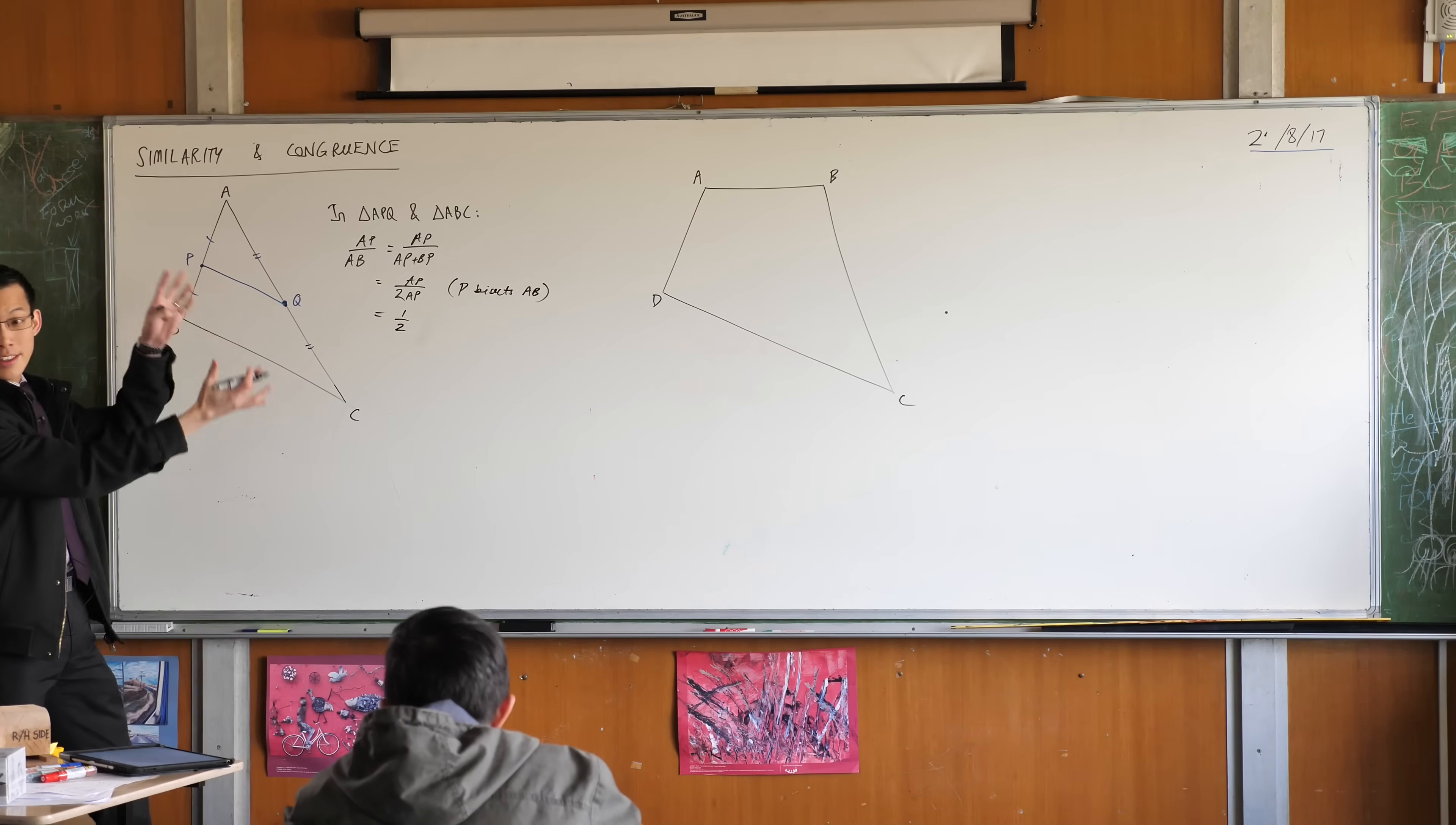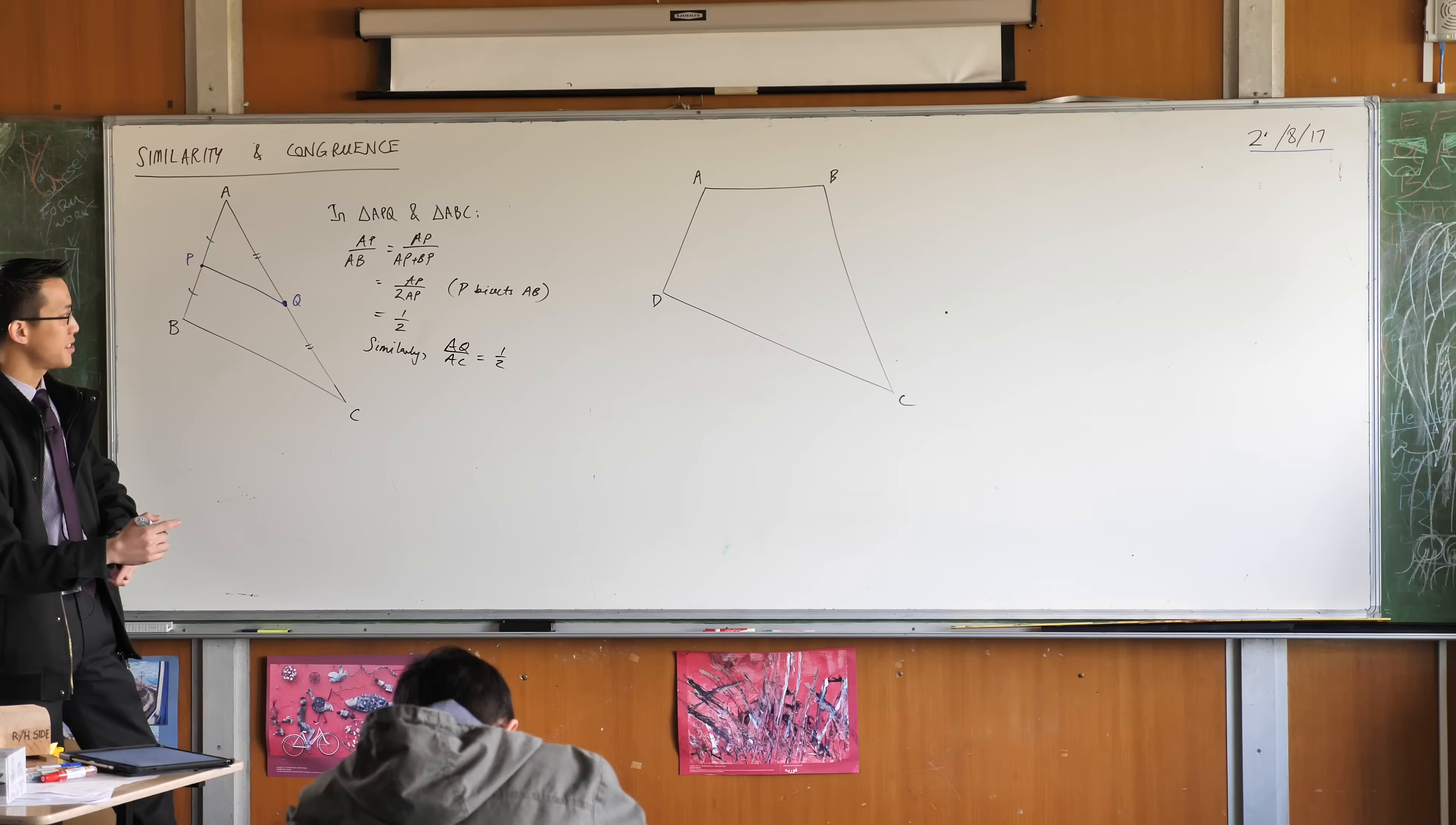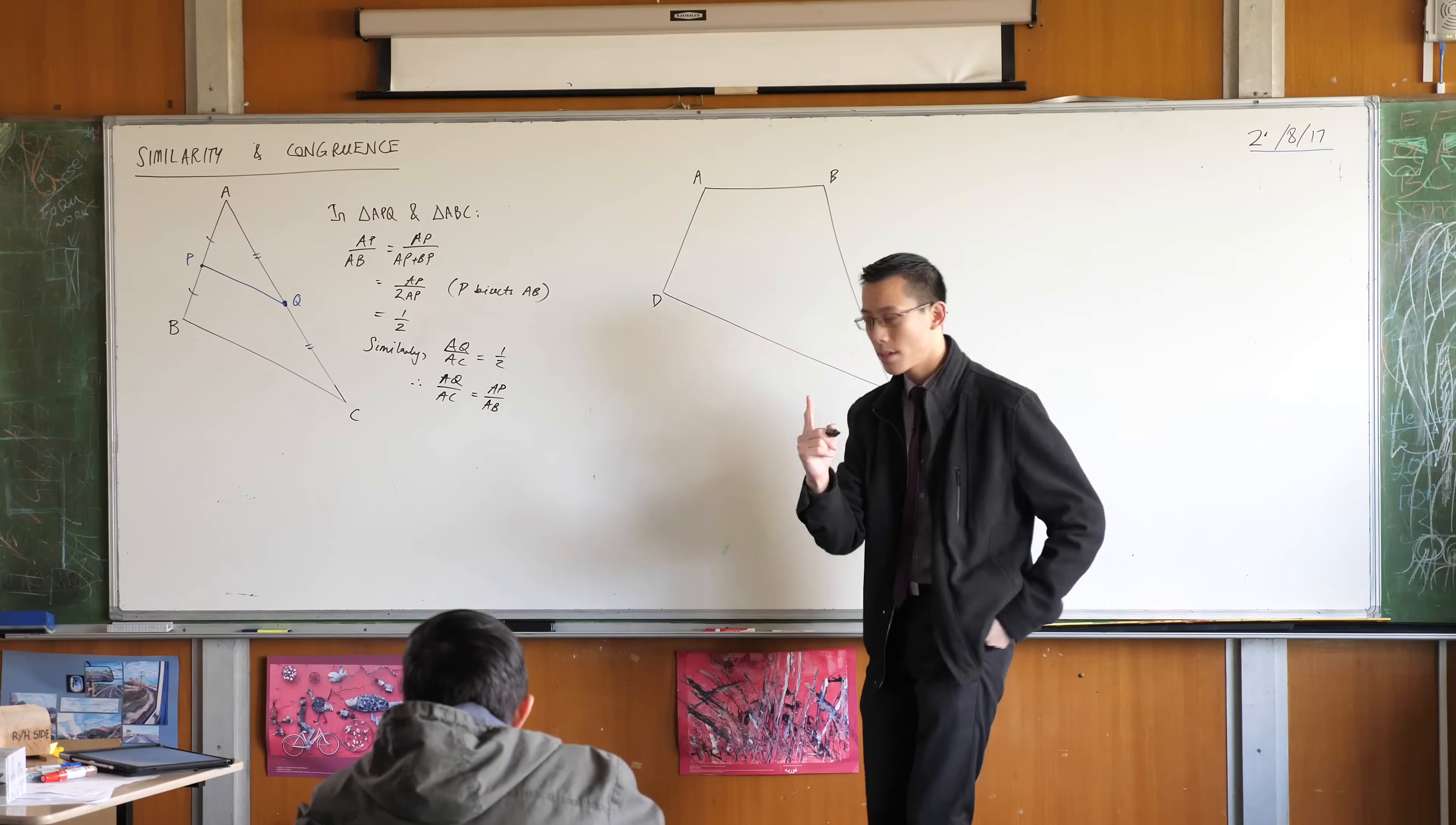But by exactly the same process, so I'm going to say similarly, since it is exactly the same, I can say that of the other sides over here, AQ and AC. So I'm going to say AQ on AC equals a half, right? So now what I've established is that corresponding sides are in the same ratio. So AQ on AC, so I've got those corresponding sides in proportion.